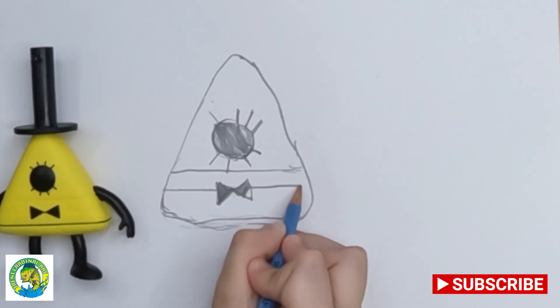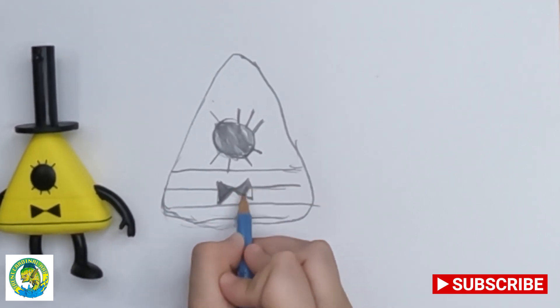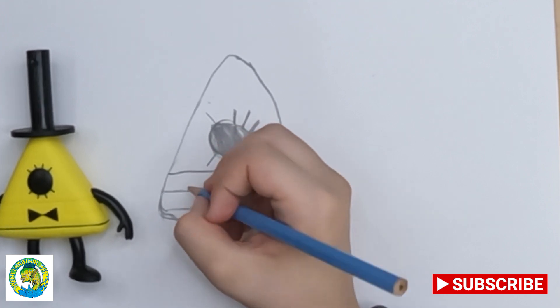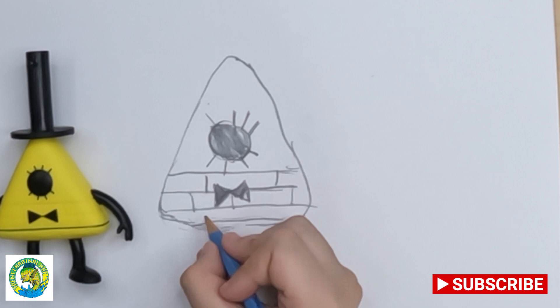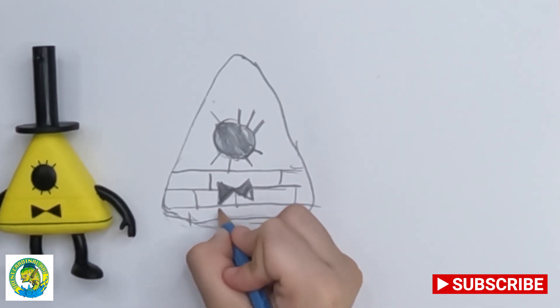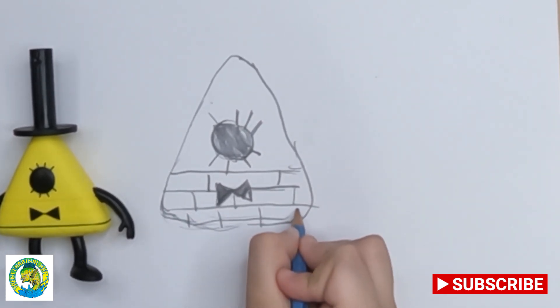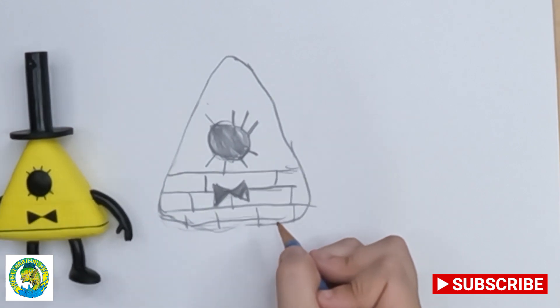And we're going to draw a line across. And another line across. Then you're going to draw vertical lines to create a brick pattern. One, two, three, four sections. Like that.